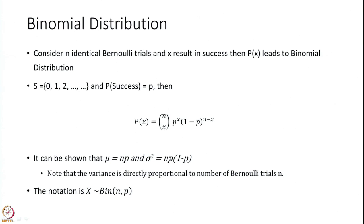Why is it called a binomial distribution? Because these are binomial coefficients — recall the expansion of (A+B)^n. Also note that the variance being directly proportional to the mean is a property very specific to binomial distribution. So if you encounter data where variance is proportional to the mean, there is a good chance you are dealing with n Bernoulli trials or a binomial distribution.